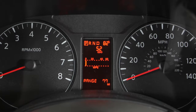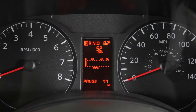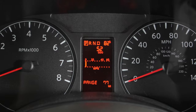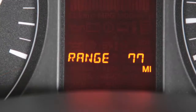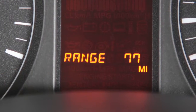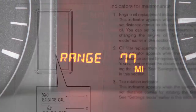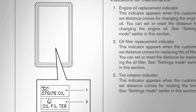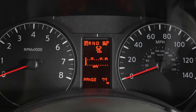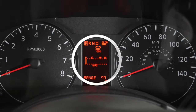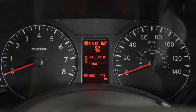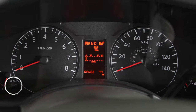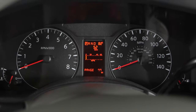Your new vehicle is equipped with a vehicle information display system that monitors a host of vehicle functions. Vehicle information is displayed in a monitor located to the left of the speedometer. Its info button is just to the left of the tachometer.